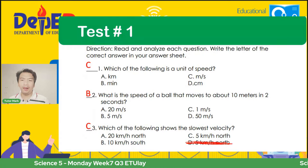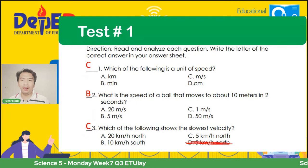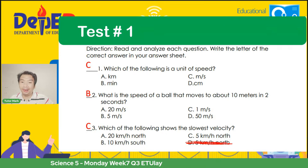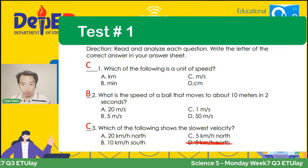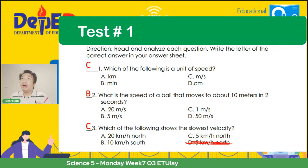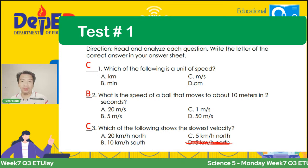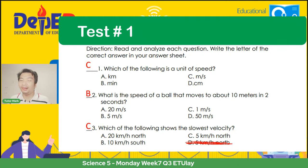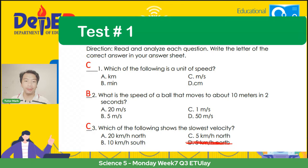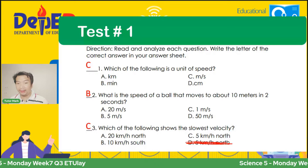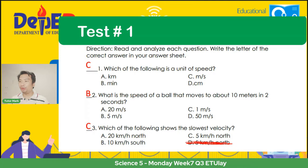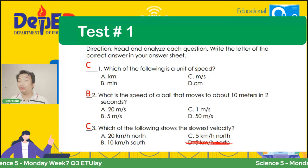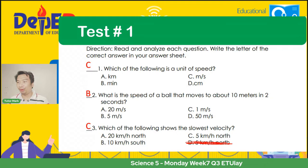Bakit ganun? Ano ba ang tinatawag nating velocity? Tignan ninyo yung mismong number — yung number ang mag-iindicate ng gaano kabilis tumakbo. Ang speed ay hindi nagpapakita ng direction, ngunit ang velocity ay nagpapakita ng direction. Halimbawa, nasa North ba? Nasa South? Nasa East? Nasa West? Katulad ng mga bagyo na nalalaman natin kung North East, South West. In this item, ang slowest velocity natin ay yung letter C or D na 5 kilometers per hour North. Your answer could be letter C or letter D because both are 5 kilometers per hour North.